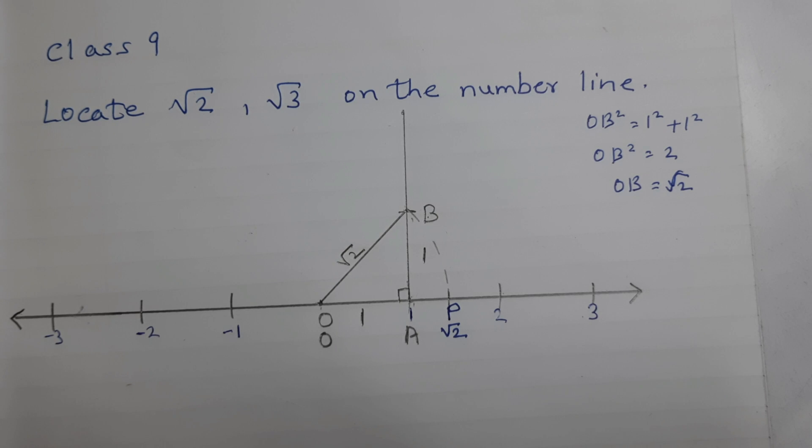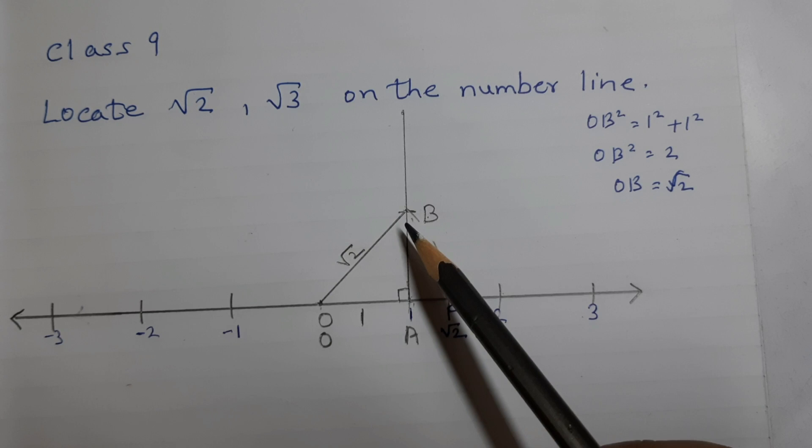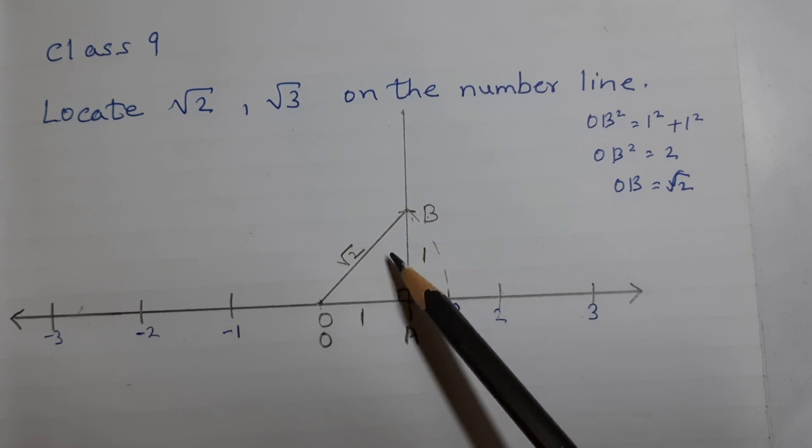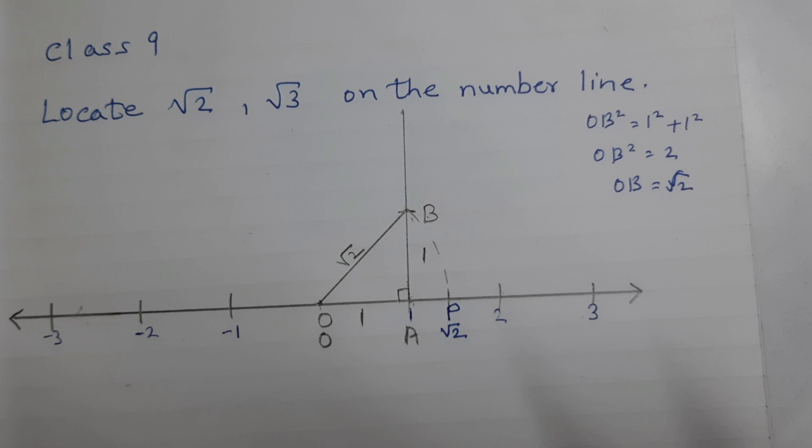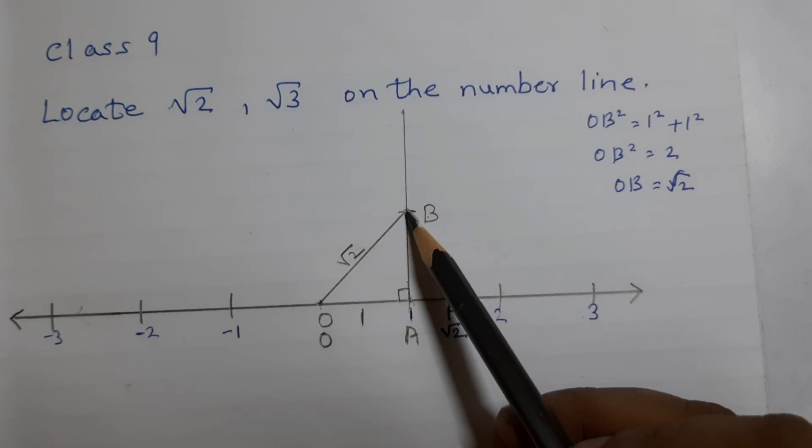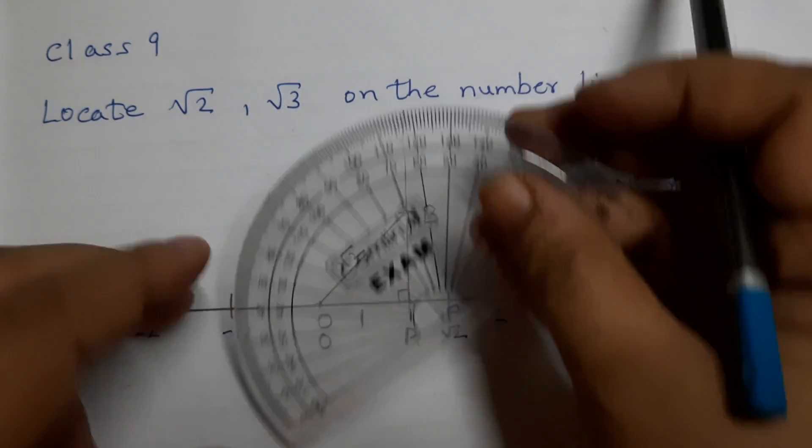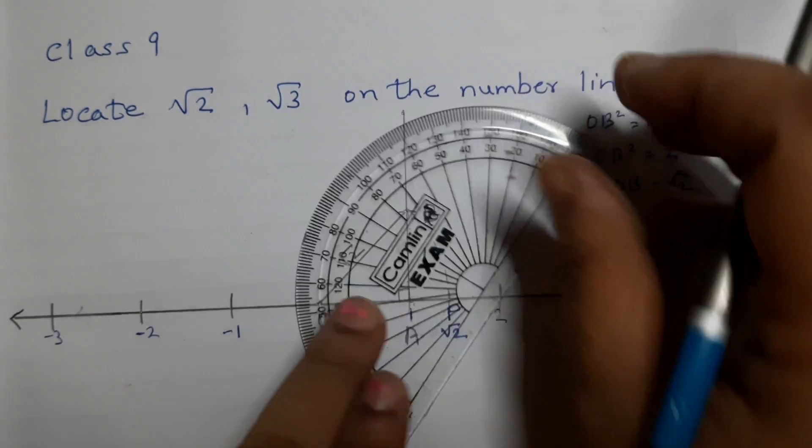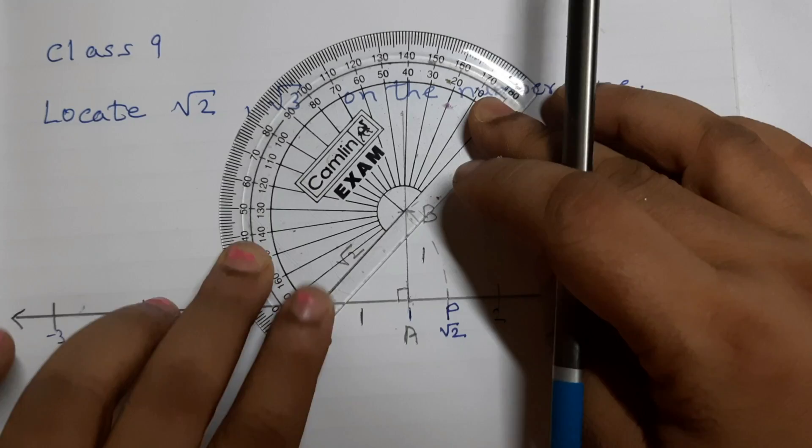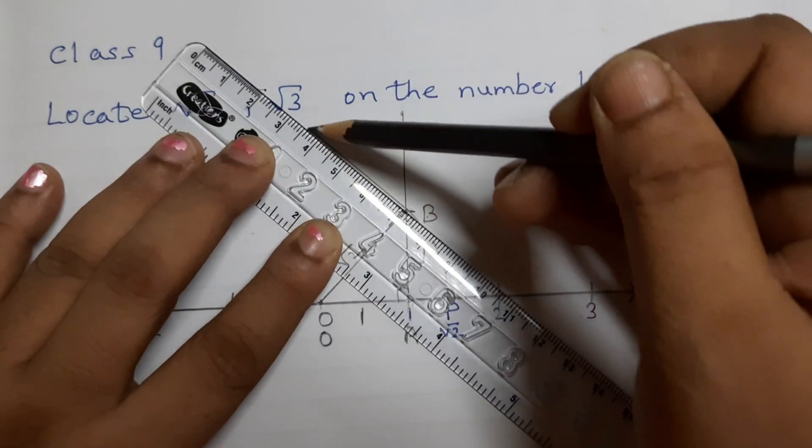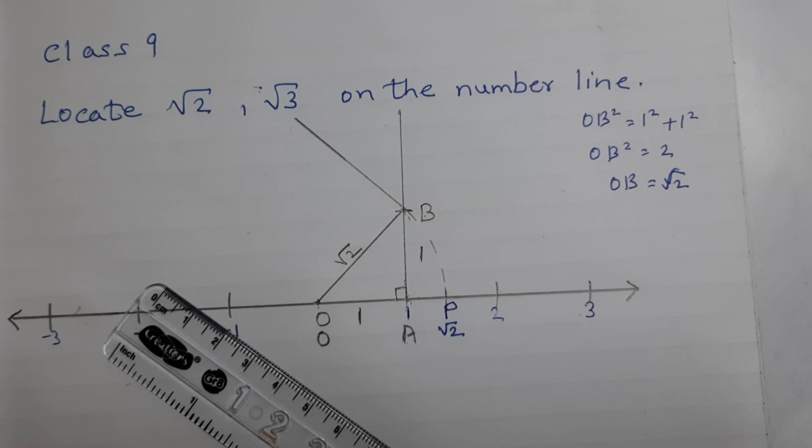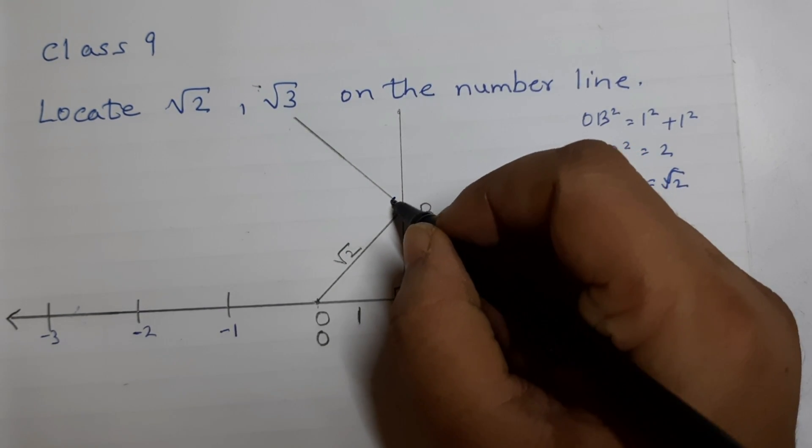Next, we are going to plot square root of 3 on the number line. For that, we are going to take OB as the base. And you can use a protractor or a compass to draw a perpendicular. Now we need to draw the perpendicular from point B. Keep your protractor like this. And this is 90 degrees here. That much is sufficient. This is again 90 degrees.